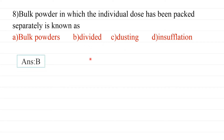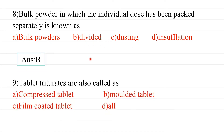Ninth question: Tablet triturates are also called as — options are compressed tablet, molded tablet, film-coated tablet, or all of the above. Tablet triturates are not prepared by compression; they are prepared by molding. So the answer is molded tablets.